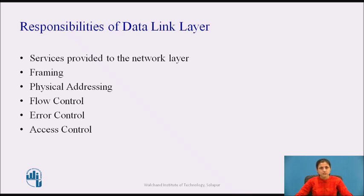Flow control comes into picture if the rate at which the data is absorbed by the receiver is less than the rate produced by the sender. The data link layer imposes a flow control mechanism to prevent overwhelming the receiver. The next function is error control. The data link layer adds reliability to the physical layer by adding mechanisms to detect and retransmit damaged or lost frames. It also uses a mechanism to recognize duplicate frames. Error control is normally achieved through a trailer added by the data link layer at the end of the frame.